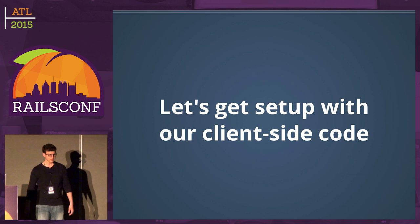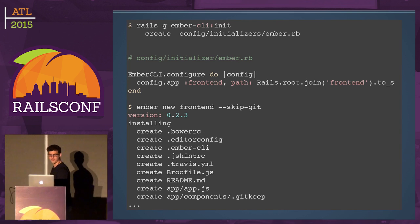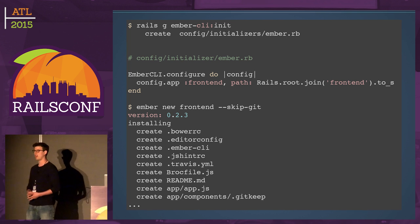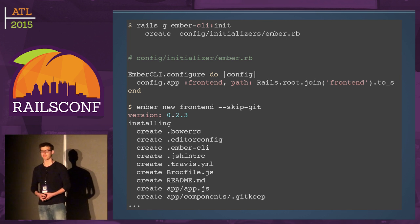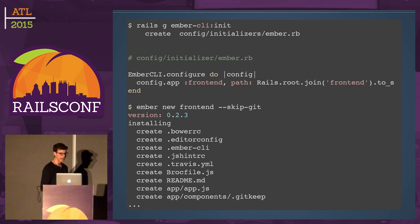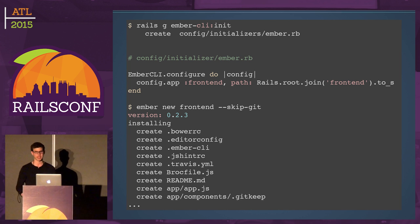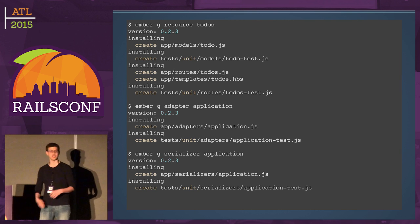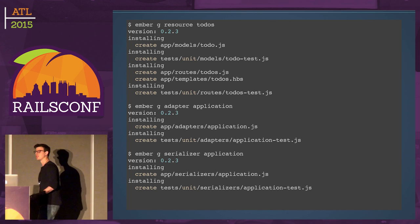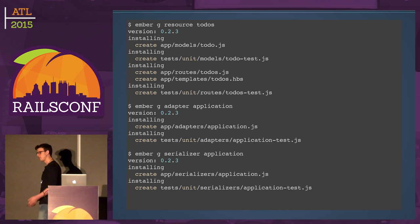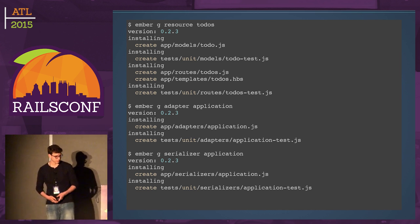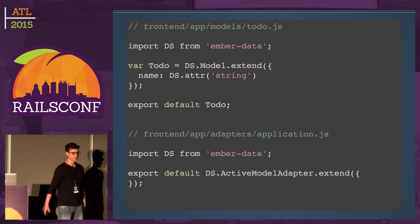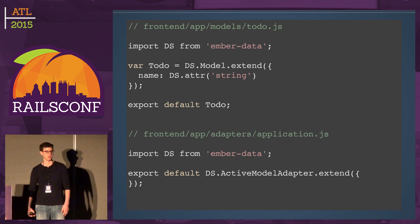I first saw this pattern used by Discourse before they were on Ember Data, and an open-source anime application called Hummingbird did it really nicely. On the client side, we initialize Ember CLI with a config file, generate a new Ember application, and generate a resource for todos — which gives us a model, route, and template. Then we need an adapter and a serializer.